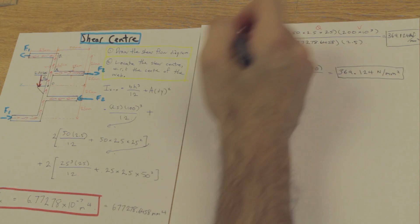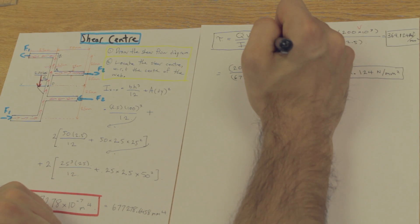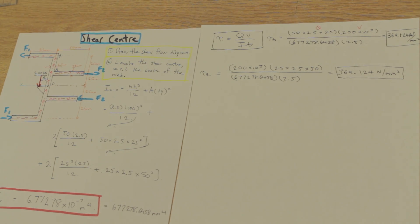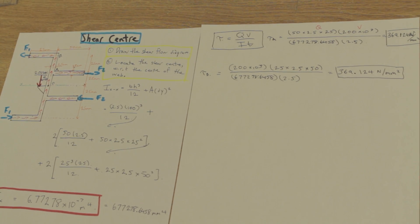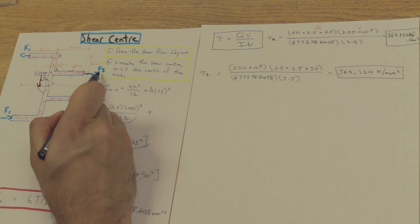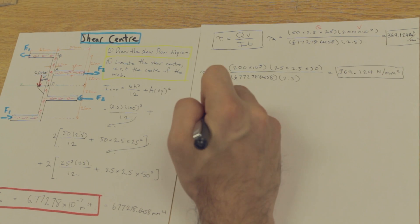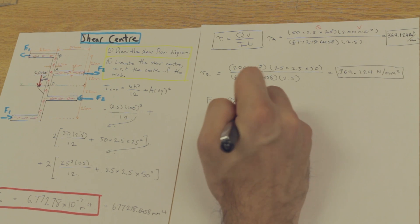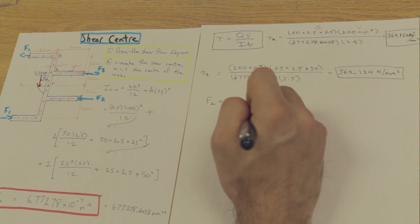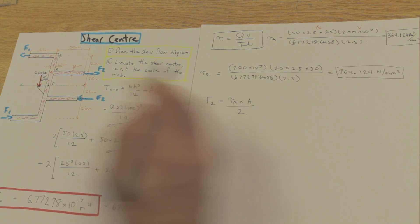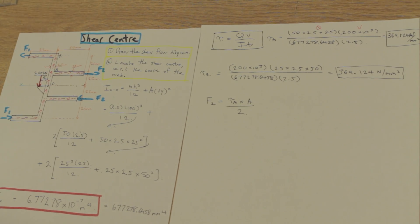Okay, so, what's the next step? We'll call this tau A, and we'll call this tau B. All right, so, we want now to resolve the forces. Let's start with that. We want to resolve the force of F2. So, the formula for F2 is going to be tau A times the area of the section at A, divided by 2. Simple enough.